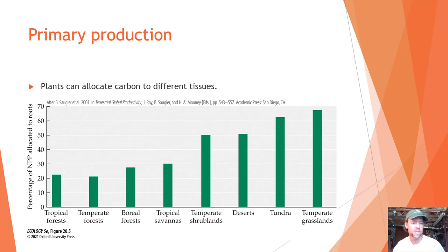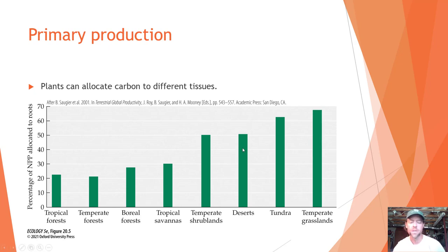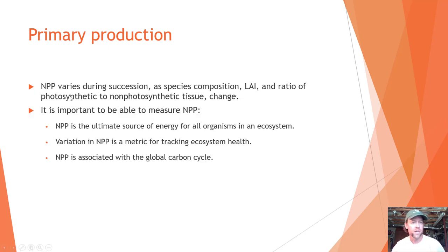Plants also allocate carbon differently to different tissues depending on their biome. In tropical forests they may not allocate much to roots, but in temperate grasslands, deserts, and tundra, plants spend a lot of their primary productivity on roots. This makes sense given local climate and water availability — it's logical for desert plants to invest heavily in roots to access water from deeper soils given the lack of precipitation.